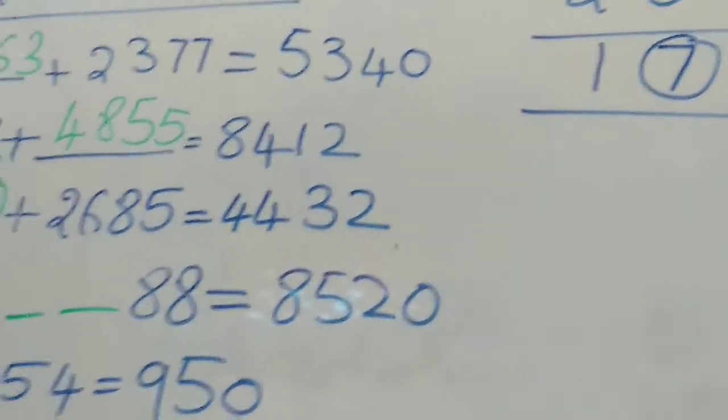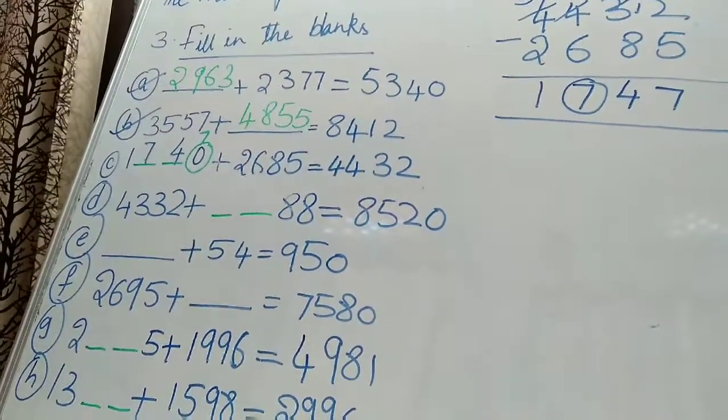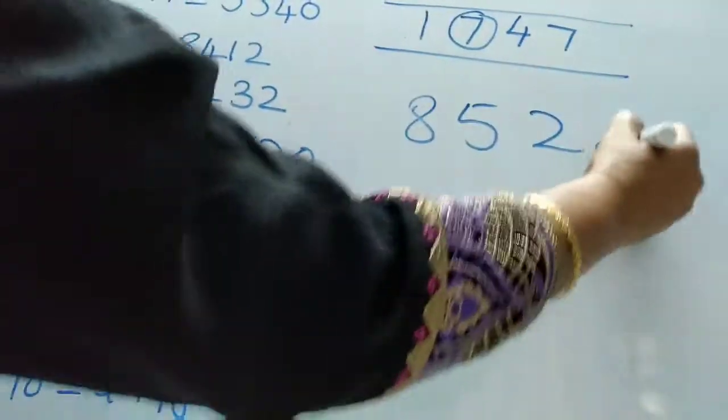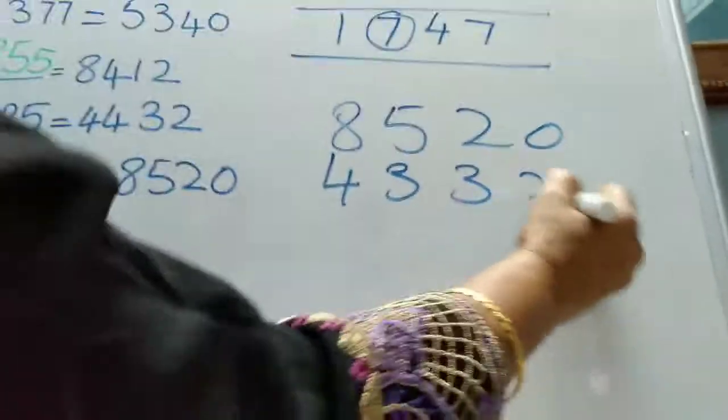It has to be 7 here. Sometimes, the printing mistake will be there. Now children, like that only, D I will do. Rest all you do now. Now take 8, 5, 2, 0 minus 1 addend 4, 3, 3, 2.